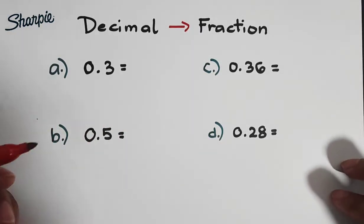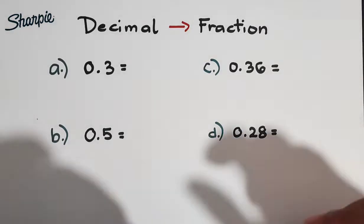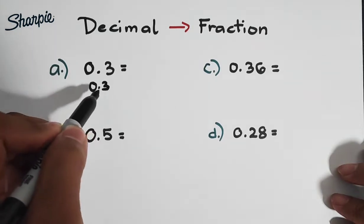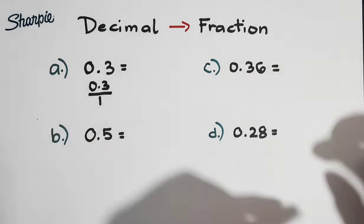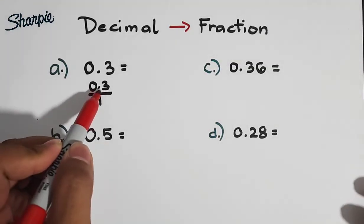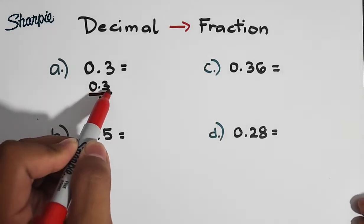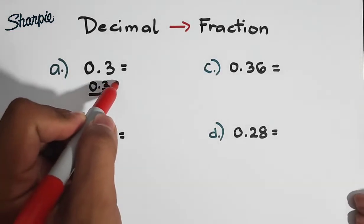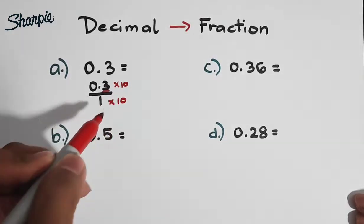So let's start with 0.3. First step you need to do here, in order for us to convert 0.3, I will copy 0.3, lalagyan ko lang sya ng 1 sa denominator. And as you can see, meron lang tayong 1 decimal place, or 1 number, on the right side of this decimal point. So meron kang 1 decimal place, or 1 decimal value sa right side ng isang decimal point, you will simply multiply the numerator and denominator by 10.